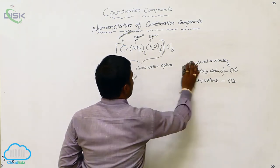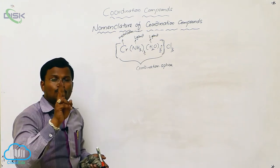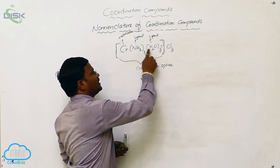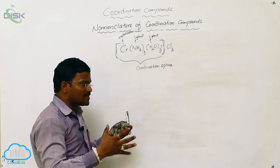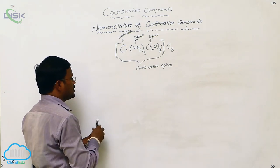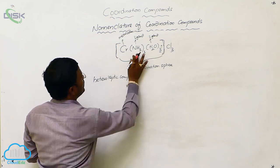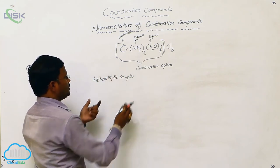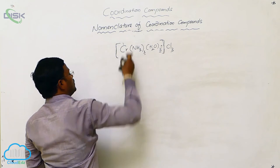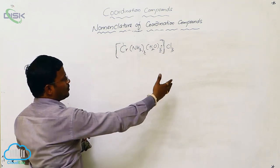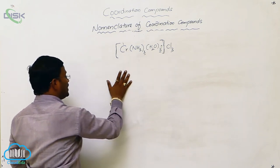Inside the coordination sphere of the given compound, two different types of ligands are present — one is ammonia and one is water. Coordination compounds that result from the combination of two or more different types of ligands are called heteroleptic complexes. Due to the presence of two different types of ligands in the coordination sphere, this given coordination compound is an example of a heteroleptic coordination compound.